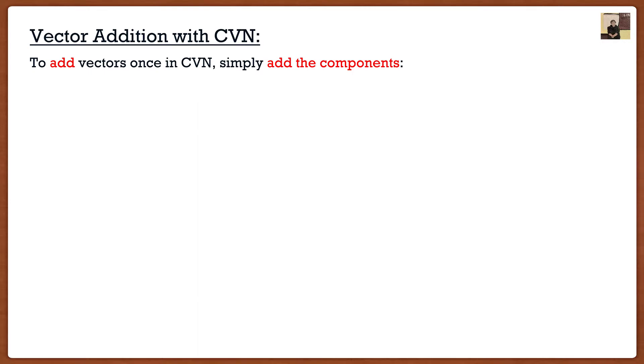If we have our vectors in this Cartesian vector notation we can add them together very simply because all we have to do is just add the components. That's it, that's all, it's actually that simple.